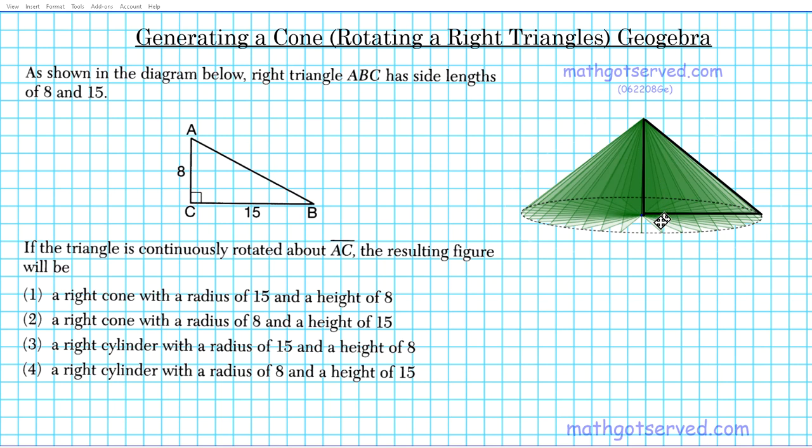We just copied the right cone that we created onto our worksheet here. So we're going to go ahead and eliminate options three and four. Our options are either one or two: right cone with radius 15 and height 8, or right cone with radius 8 and height 15.